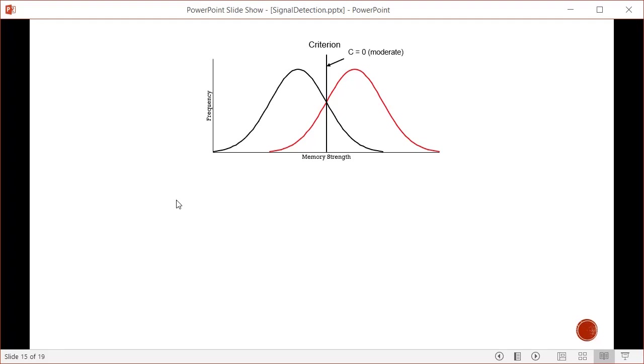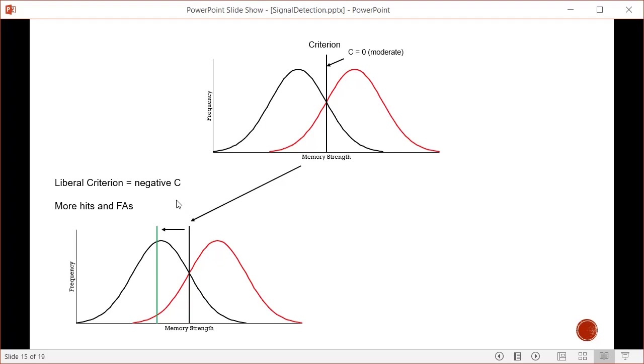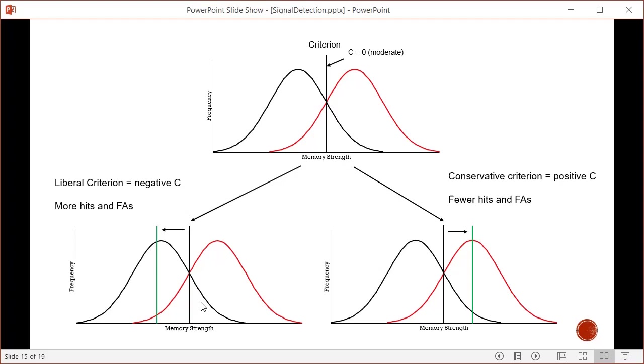Here's an example where the criterion is in the middle, giving an even split of responses. With a liberal criterion, it shifts to the left - you'll have more hits but also more false alarms. The area under the red distribution becomes much larger for hits, and the false alarm area under the black curve also gets larger. With a conservative criterion, the criterion moves to the right. You'll have fewer hits but also fewer false alarms, as both areas get smaller.